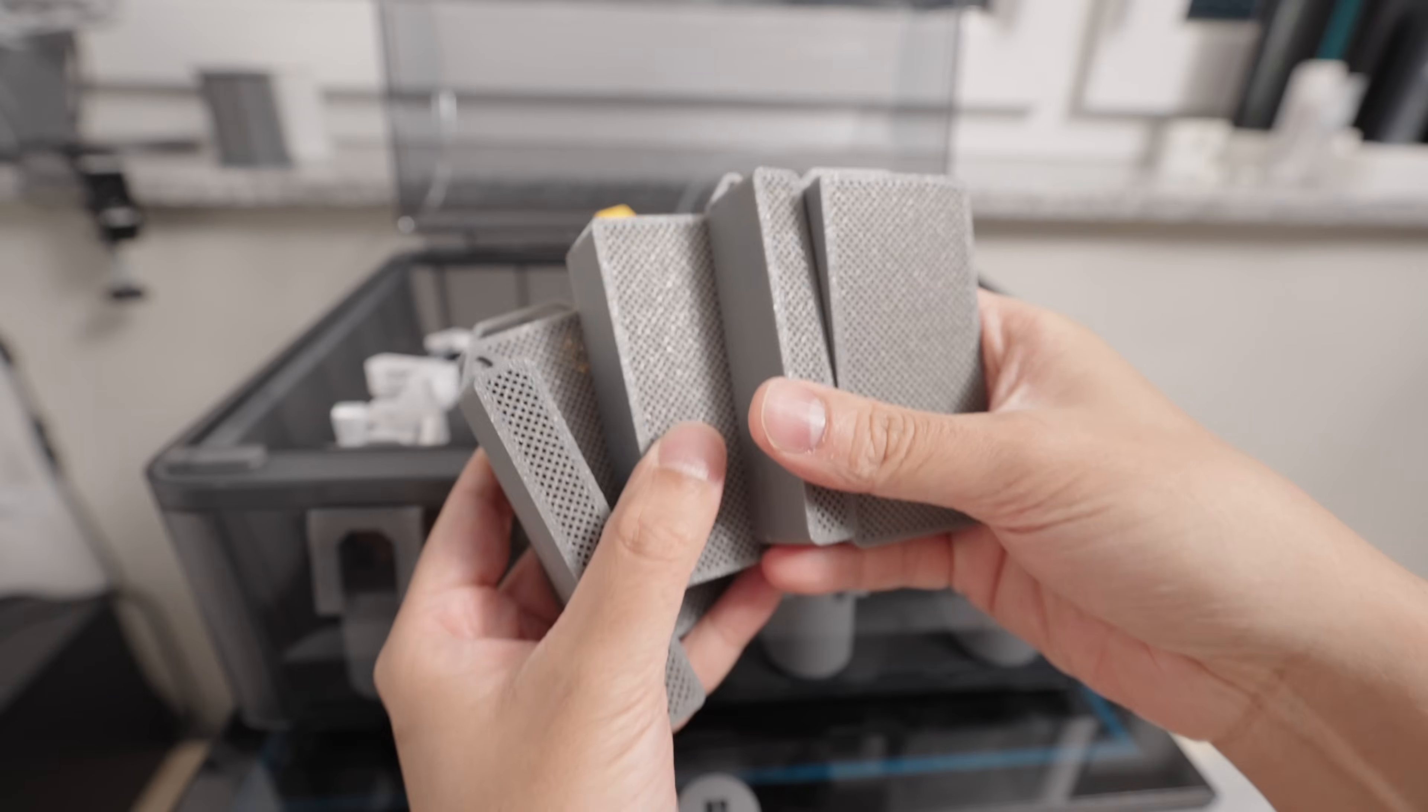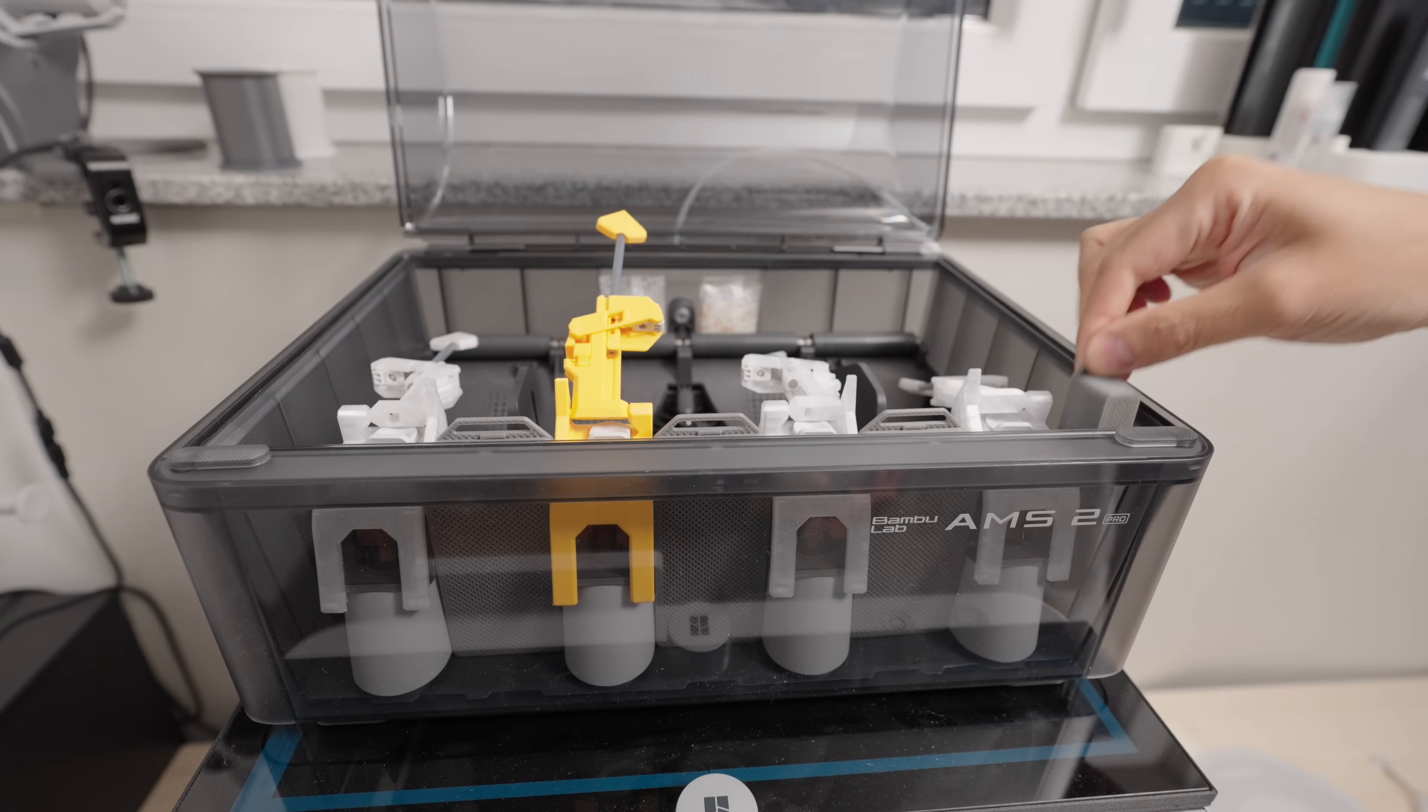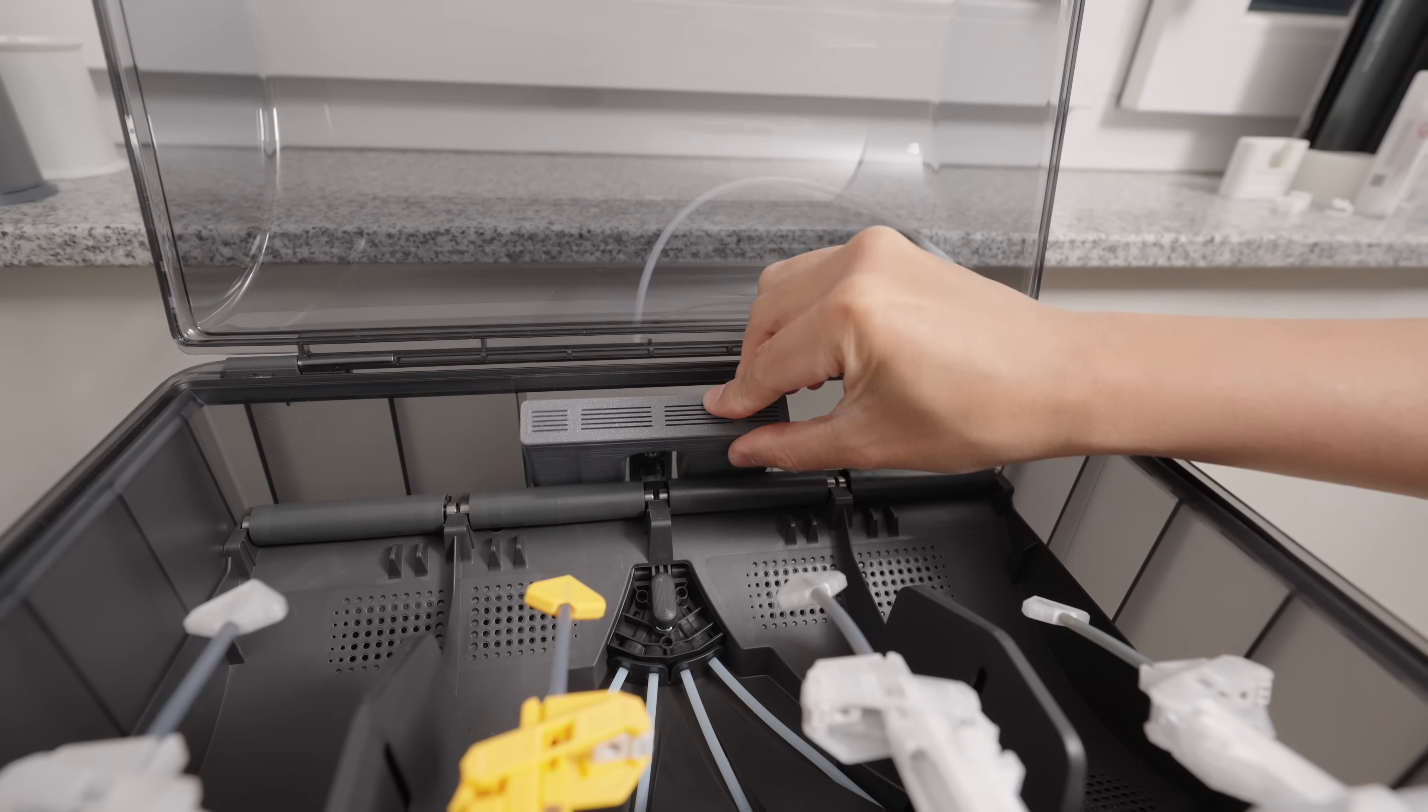Another thing that's great about the snack cutter is that you can still place desiccant boxes in your AMS 2 Pro and while we're at it let's place this desiccant box at the rear side of the AMS 2 Pro.